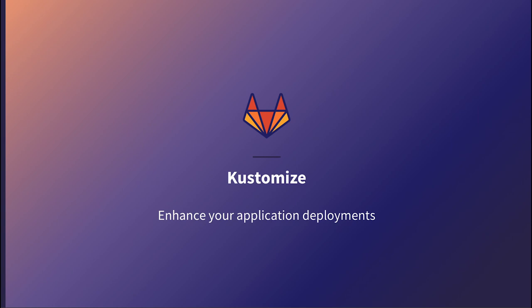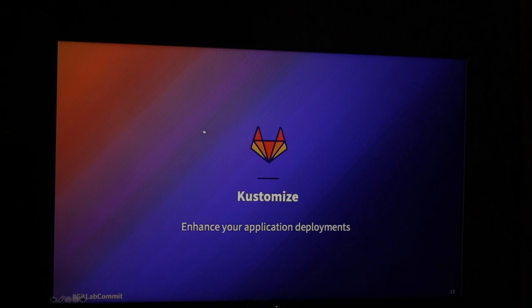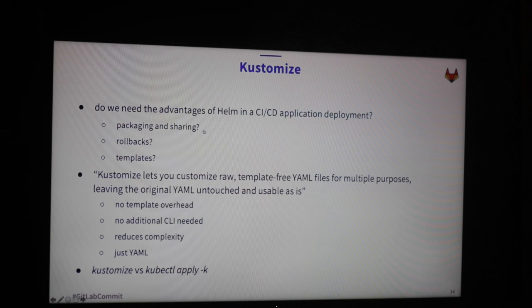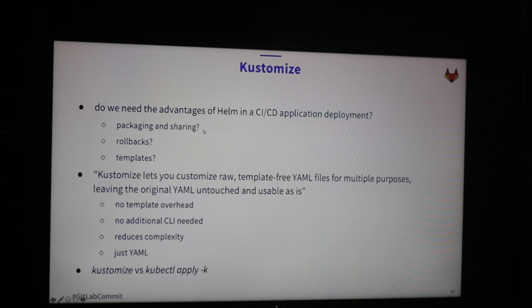Two more things. One is a tool called Kustomize. It's basically a tool that helps you deploy your applications. You might think 'why do I need Kustomize? I can use Helm.' For me - and this is only my opinion - I use Helm when I want to package a bigger, complex application and share it with somebody, or deploy it to 20 different environments. But if I just want to deploy one or two microservices completely integrated with my CI/CD pipeline, I don't need templating, I don't need rollbacks provided by Helm. If I want to do a rollback, I'll do it with my CI/CD pipeline.